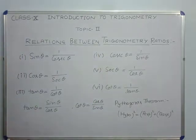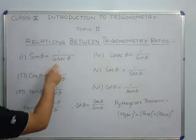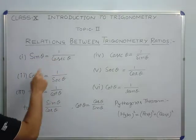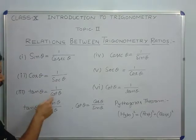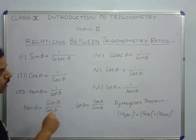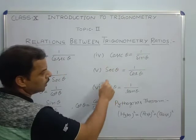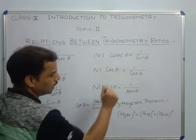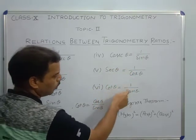As you know, there are all 6 trigonometry ratios. The first: sin theta equal to 1 upon cosec theta, cosec theta equal to 1 upon sin theta, and tan theta equal to 1 upon cot theta. Cos theta equal to 1 upon sec theta, sec theta equal to 1 upon cos theta, and cot theta equal to 1 upon tan theta.